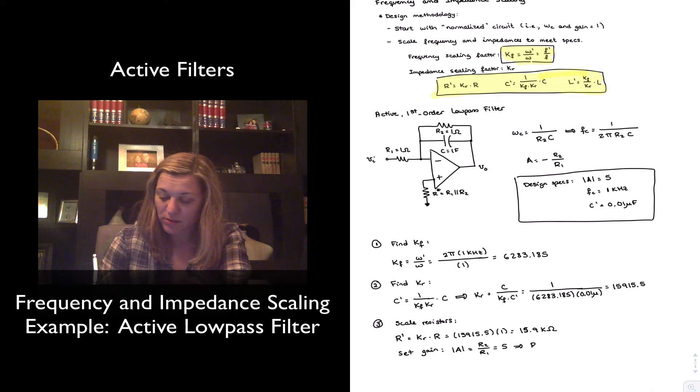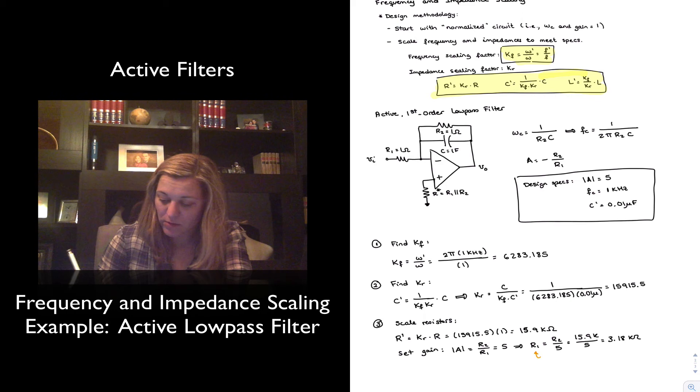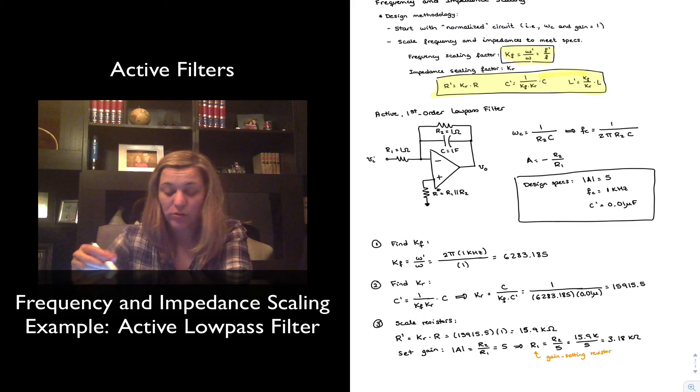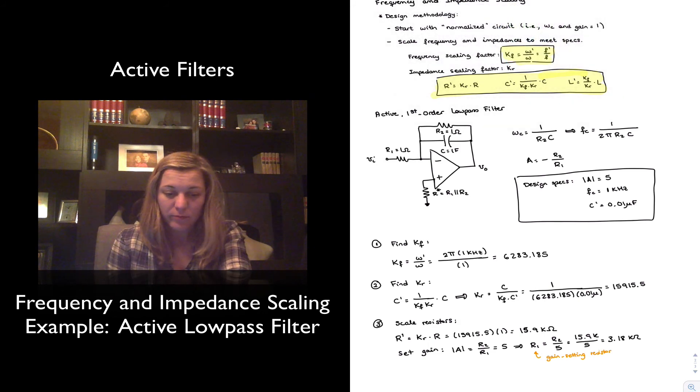So that means that R1 will be equal to R2 divided by 5, which is 15.9 K divided by 5, which is 3.18 kilo ohms. And again, I can consider this my gain setting resistor. Whereas R2, I'm considering it my cutoff frequency setting resistor.